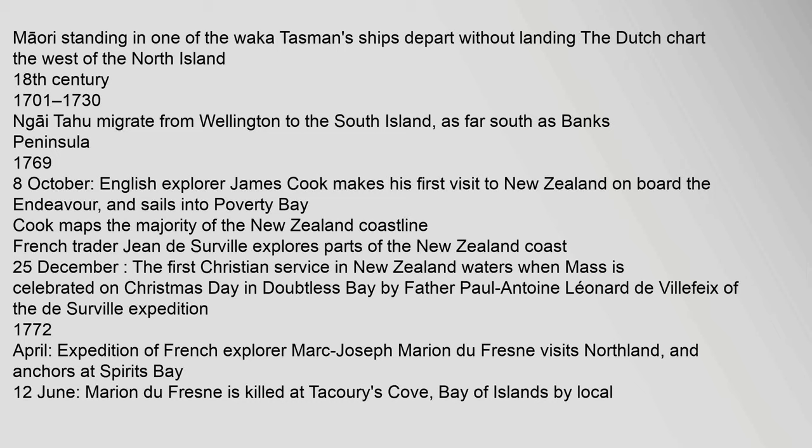18th century. 1701–1730: Ngai Tahu migrate from Wellington to the South Island, as far south as Banks Peninsula. 1769, 8 October: English explorer James Cook makes his first visit to New Zealand on board the Endeavour and sails into Poverty Bay. Cook maps the majority of the New Zealand coastline. French trader Jean de Surville explores parts of the New Zealand coast.